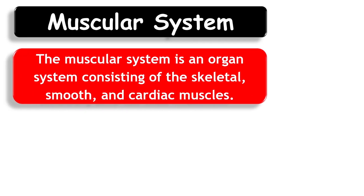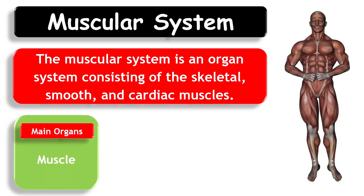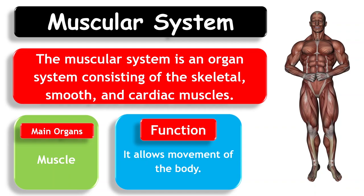Muscular System. The muscular system is an organ system consisting of the skeletal, smooth, and cardiac muscles. Main organs: muscles. Function: It allows movement of the body.